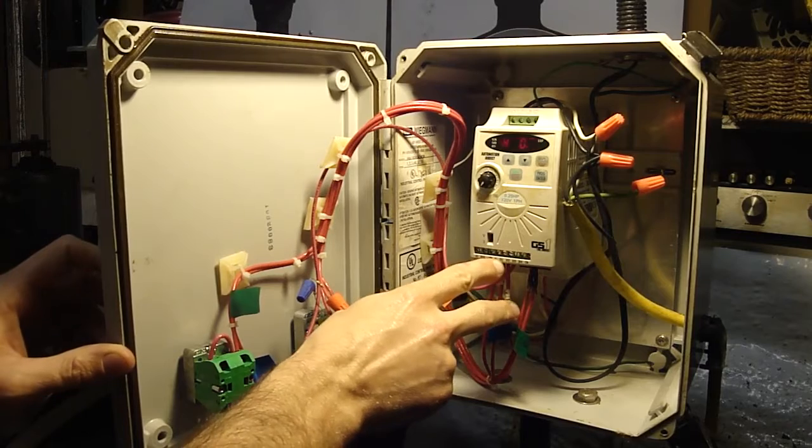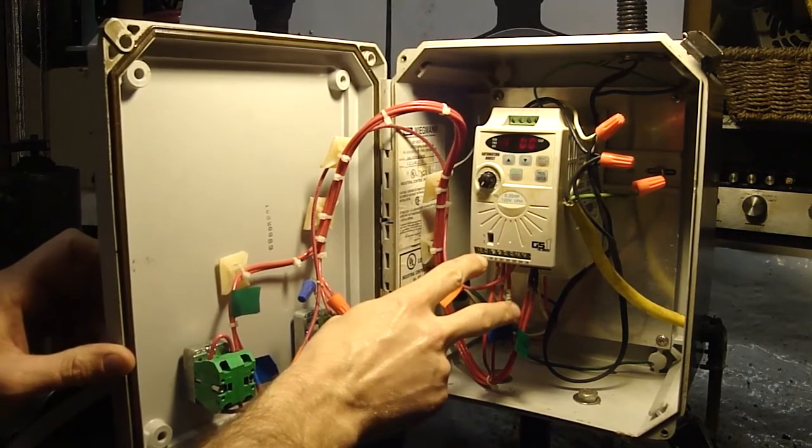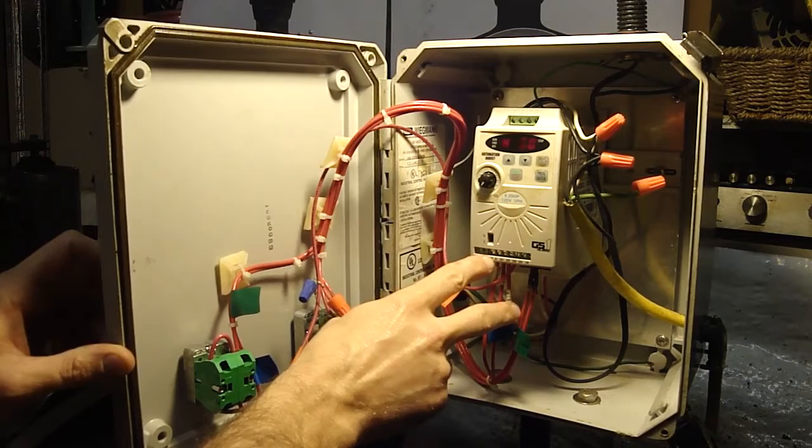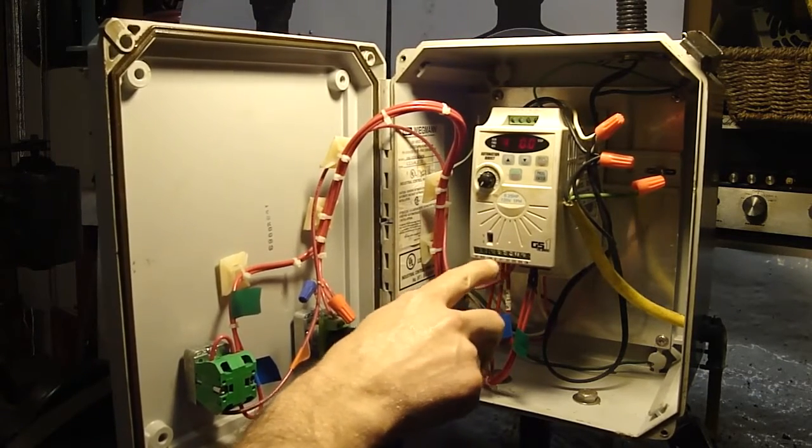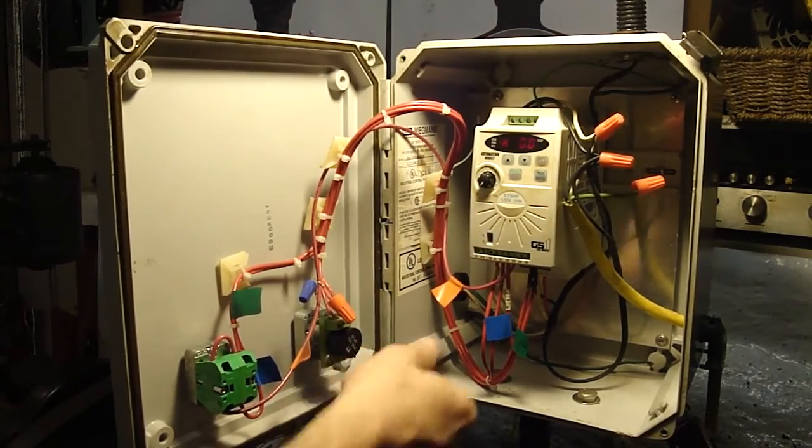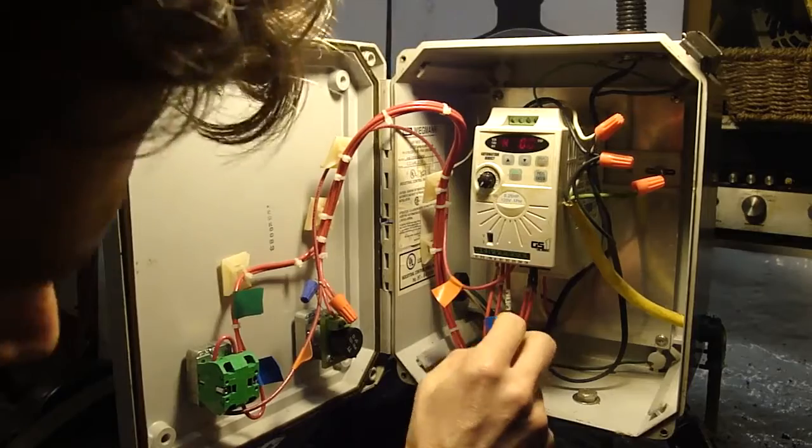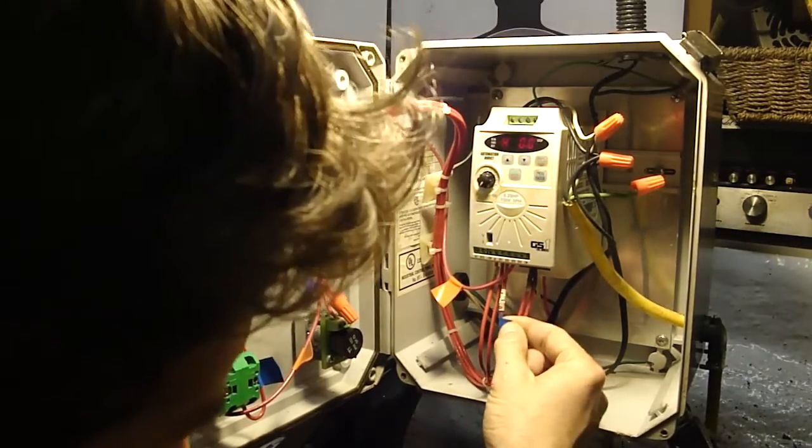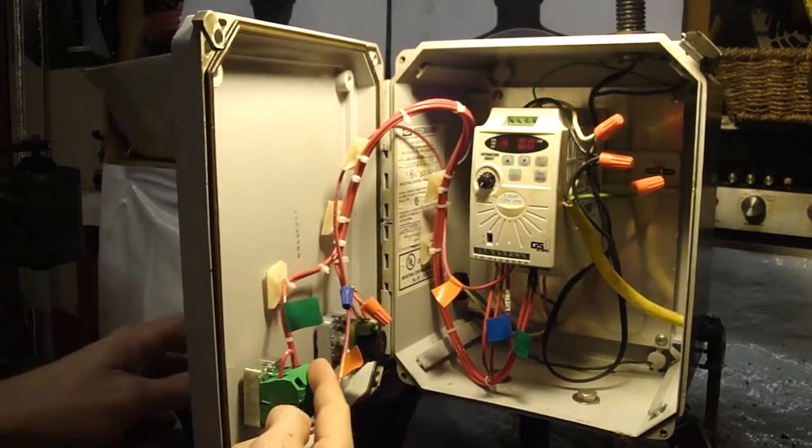Which is the first D terminal after you get like R1, R10, plus 10 volt, AI, which these are, this is what's going, the plus 10 and the AI, that's what's going back over to your pot that controls the speed. So D11, D11 to common, that completes the circuit for forward.